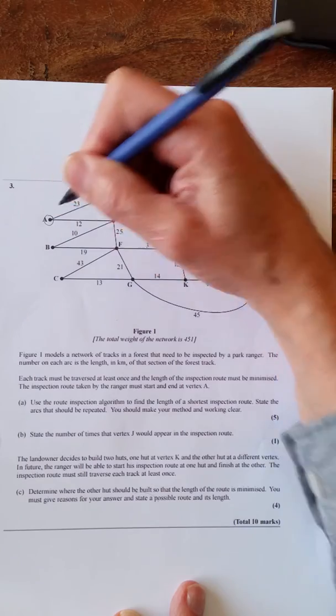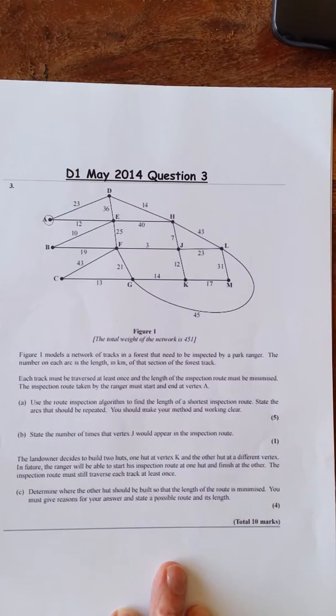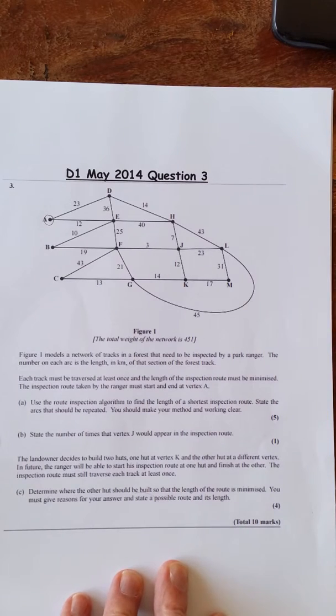So let's put that - must start and finish at A. You must make your method and working clear. So let's look at the different options.